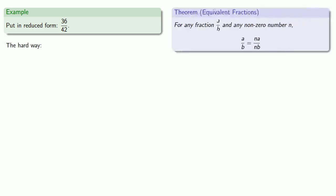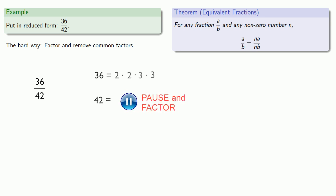For example, let's try to put in reduced form the fraction 36, 40 seconds. Now there's two ways we can do this. We can do this the hard way, or we can do this the easy way. Let's do it the hard way first. So our theorem says that any time we find a common factor in numerator and denominator, we can remove that common factor. And so that suggests that what we should do is factor and remove common factors. So first, we'll factor 36, and 42 we'll factor as...